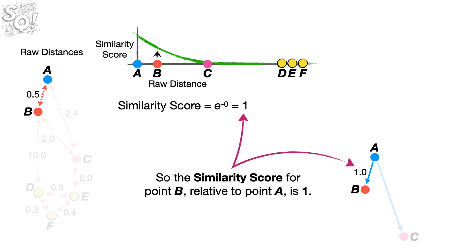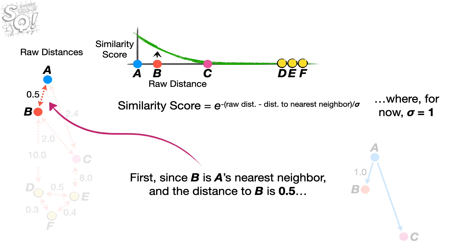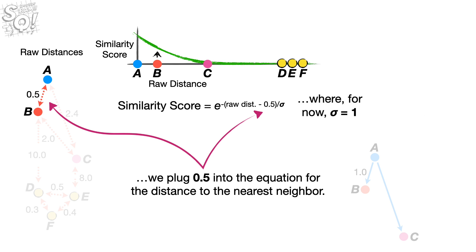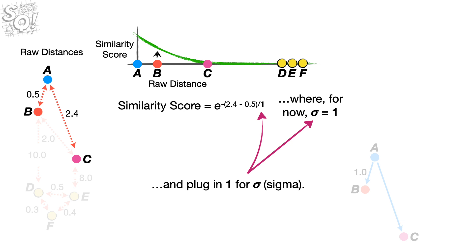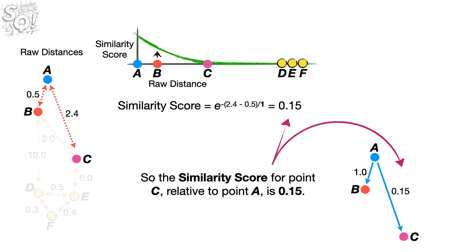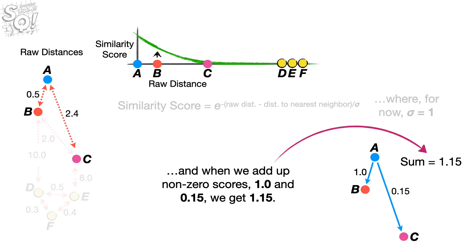So the similarity score for point B relative to point A is 1. Now, let's calculate the similarity score for C relative to A. Since B is A's nearest neighbor and the distance to B is 0.5, we plug 0.5 into the equation for the distance to the nearest neighbor. Now let's plug in the distance from A to C, 2.4, and plug in 1 for sigma. And when we do the math, we get 0.15. So the similarity score for point C relative to point A is 0.15. Because points D, E, and F are all way far away from A, their similarity scores are all super close to 0, so we can ignore them. And when we add up the non-zero scores, 1 and 0.15, we get 1.15.